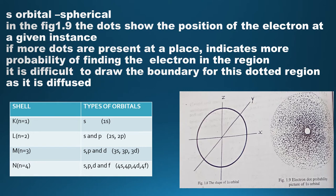The s orbital is spherical in shape as shown in the figure. A better way of representing the s orbital is shown in figure 1.9. In this diagram, the dots show the position of the electron at a given instance. Since the electron is continuously revolving around the nucleus, they are represented by dots depending on the probability of finding the electron at a particular time. If more dots are present at a place, it indicates a higher probability of finding the electron in that region.